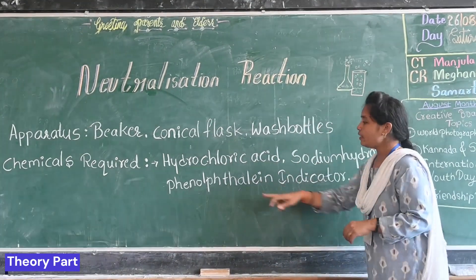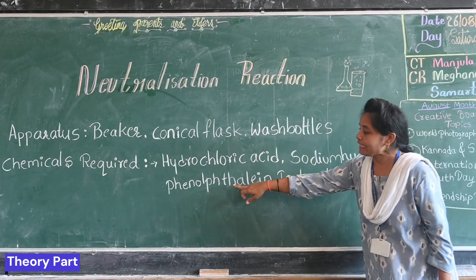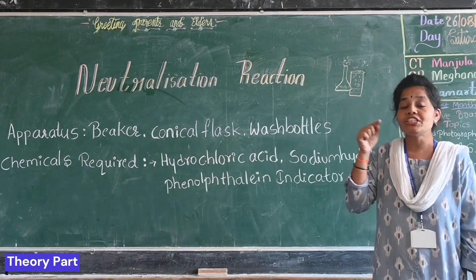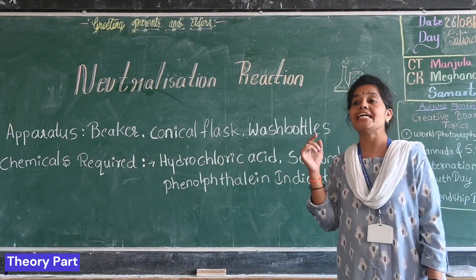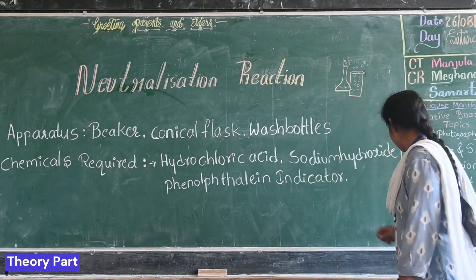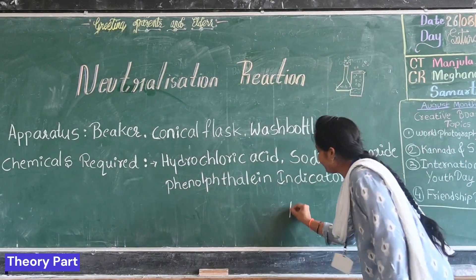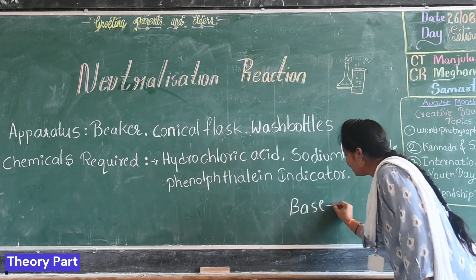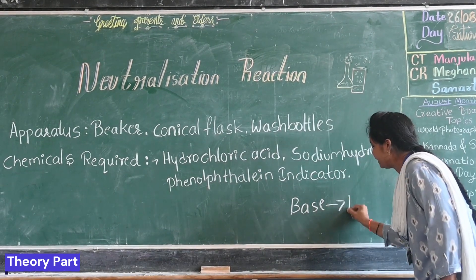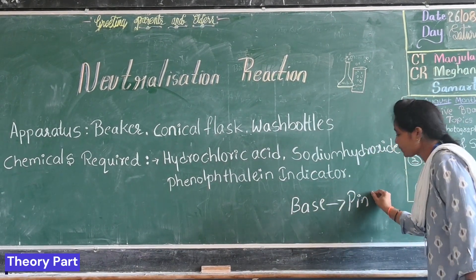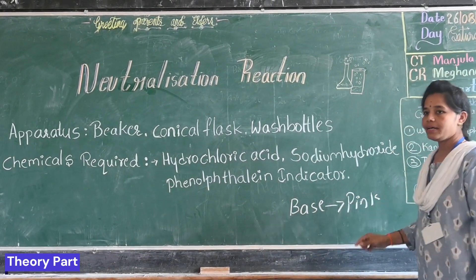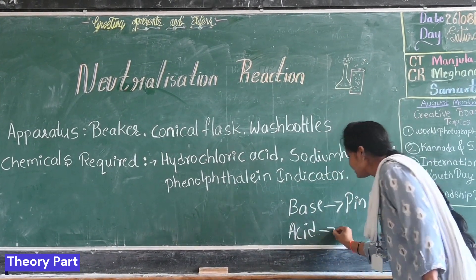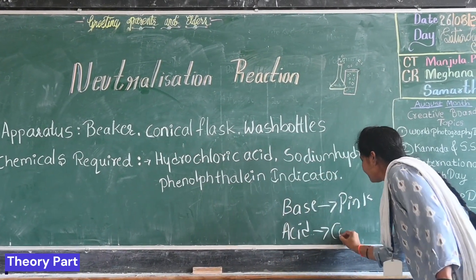For example, phenolphthalein. Phenolphthalein is an indicator which changes its color in a base — it changes to pink. In an acid, it is colorless.